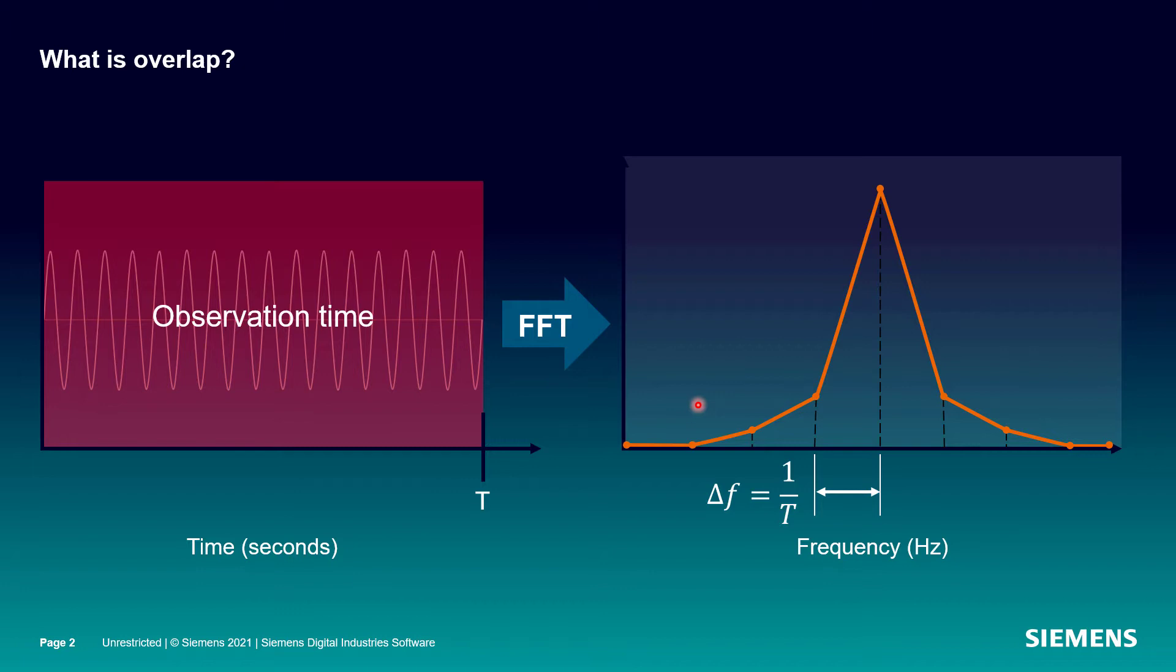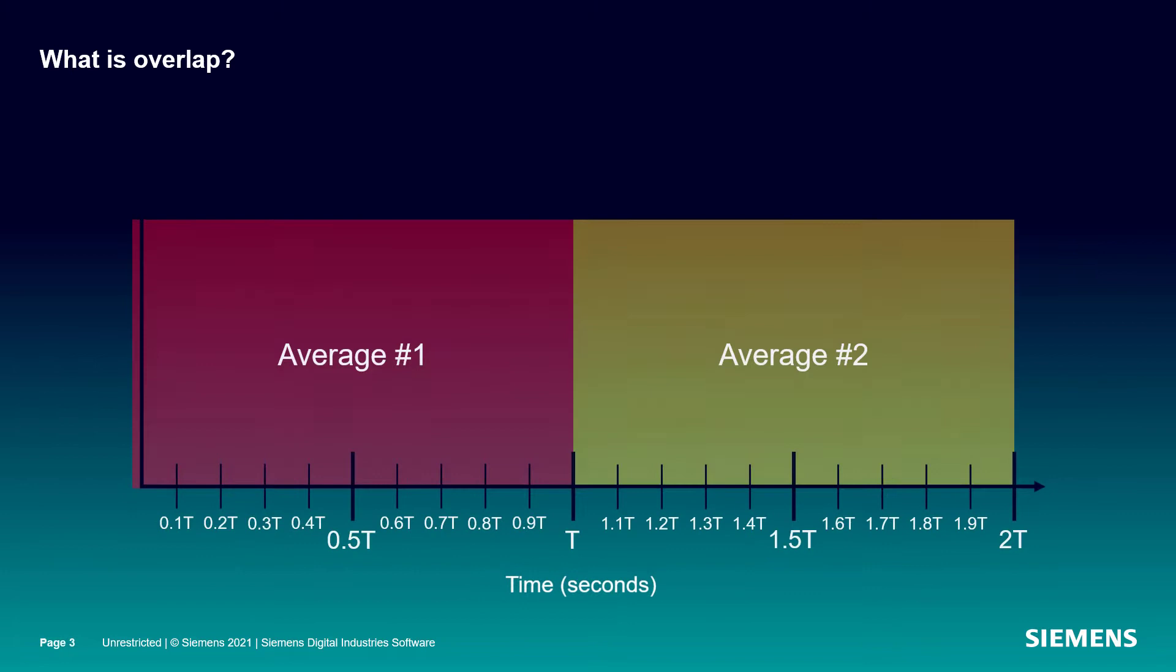So I need T seconds worth of time data to get one frequency spectrum. When I'm taking multiple averages or multiple FFT calculations in a track processing scenario, then we have something else to consider and that's overlap.